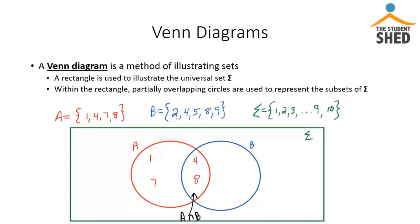And then let's see, set B has 2 as an element but that's not in A. So we're going to put that over in the section that's only elements of B. 5 is in B but not in A. And 9 is in B but not in A.